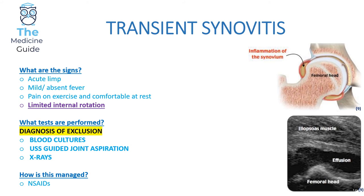In medical school final questions, they will often ask you to determine if the condition is transient synovitis or septic arthritis. The key discriminating features are that in septic arthritis the child will look very, very obviously unwell, whereas in transient synovitis the child will look quite well regardless.